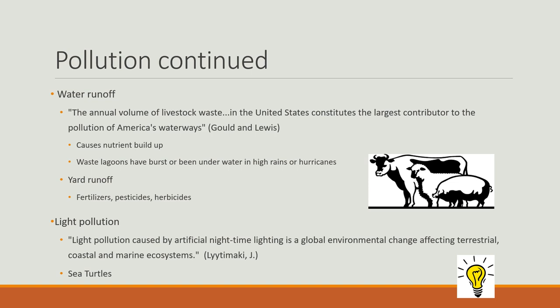Light pollution is another form. It is caused by artificial nighttime lighting and is a global environmental change affecting terrestrial, coastal, and marine ecosystems. One example is when sea turtles hatch, they go towards the brightest light, which with coastal development is no longer the moon.